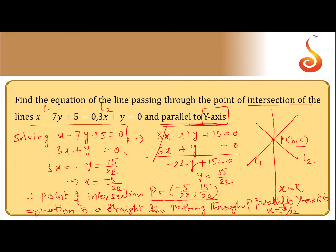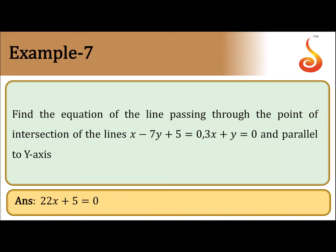Of course, that can also be written as 22x plus 5 equals 0. So the equation of the required line is 22x plus 5 equals 0.